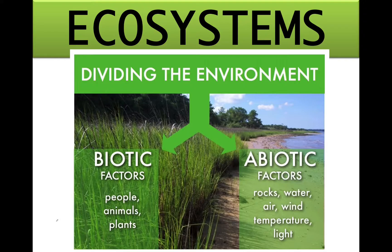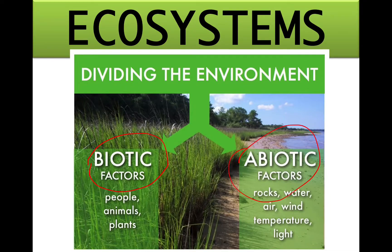The living components, such as the people, the animals, the plants, are referred to as biotic factors. All the non-living components, such as the rocks, water, air, wind, temperature, and light — all of these components make up what we call abiotic factors.